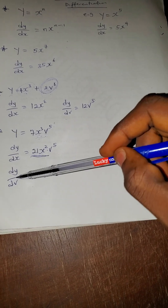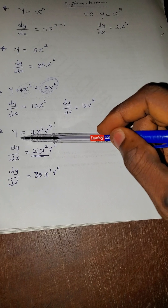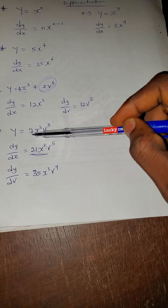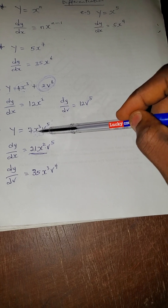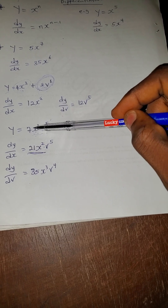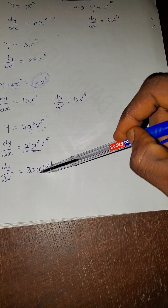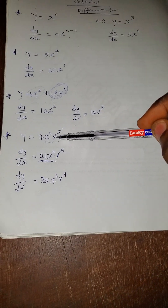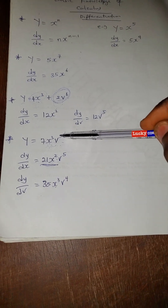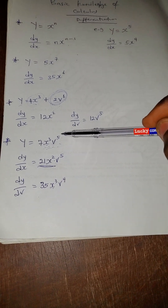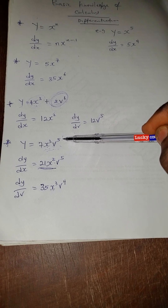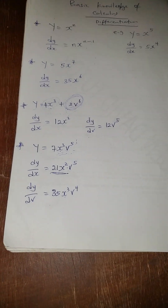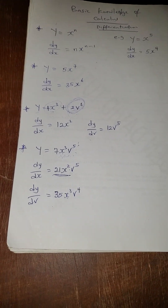For dy/dv in this multiplication case: five times seven is 35, and we do not exclude x — we include it. So we have x³ times v to the power five minus one, which is v⁴. Therefore dy/dv = 35x³v⁴.